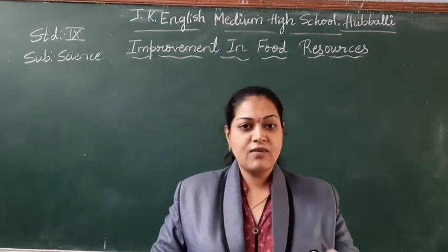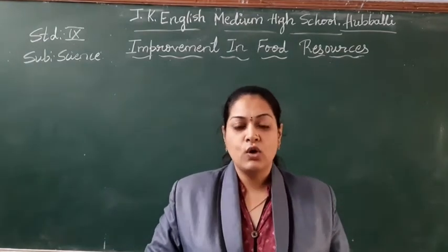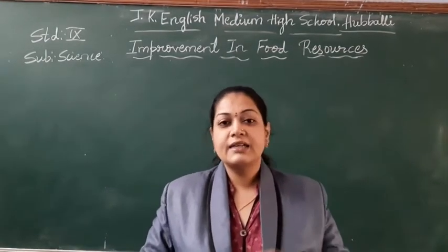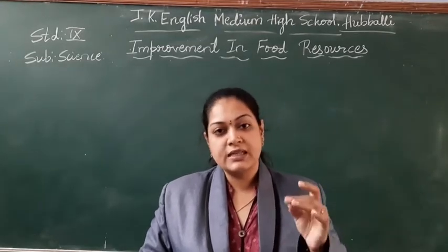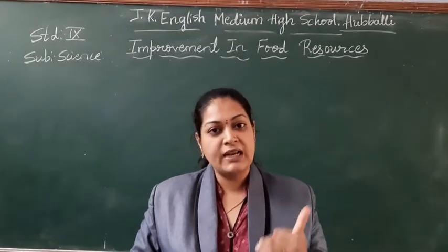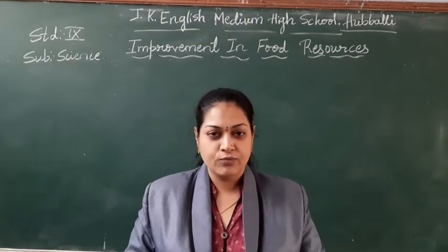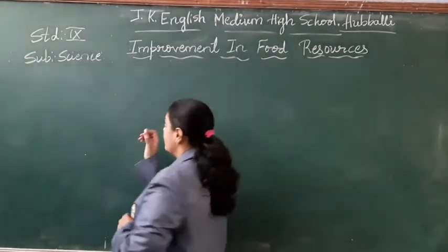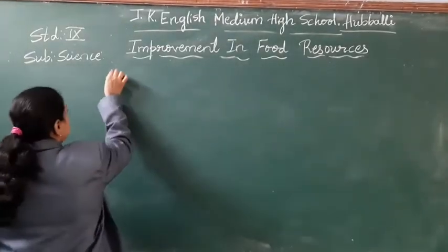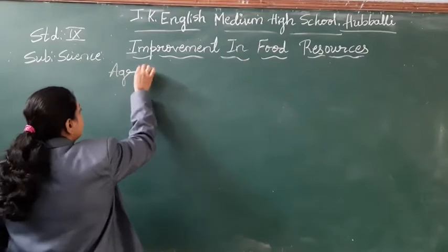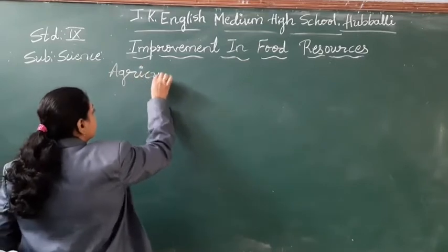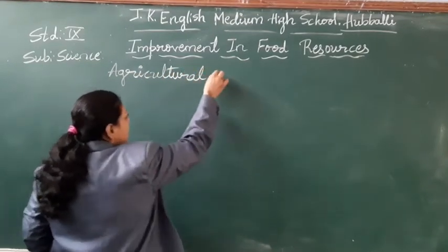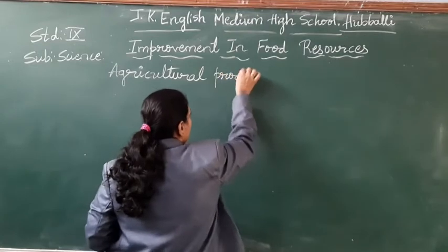Just now I told you the food resources: vegetables, fruits, cereals, pulses, millets, grains, and everything. So these are all agricultural products.